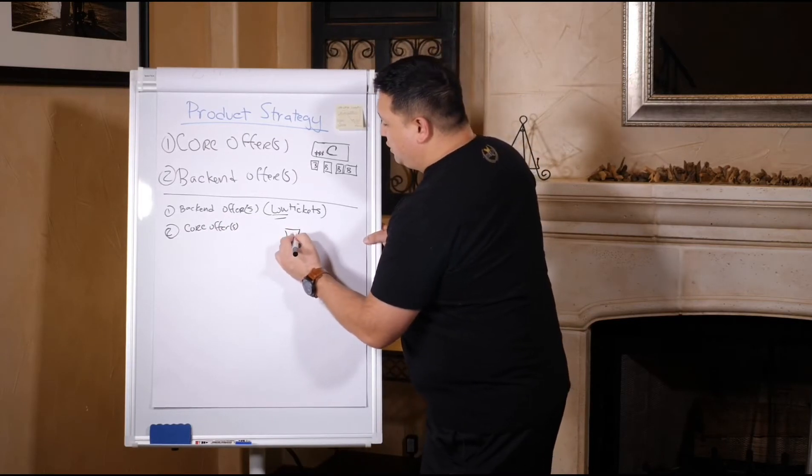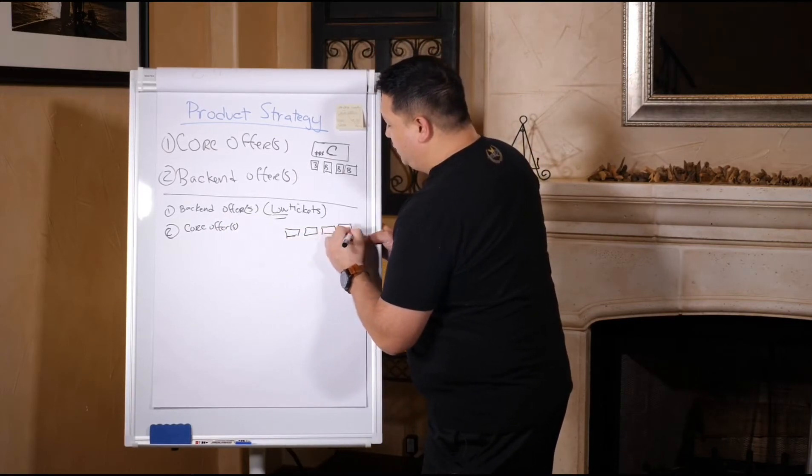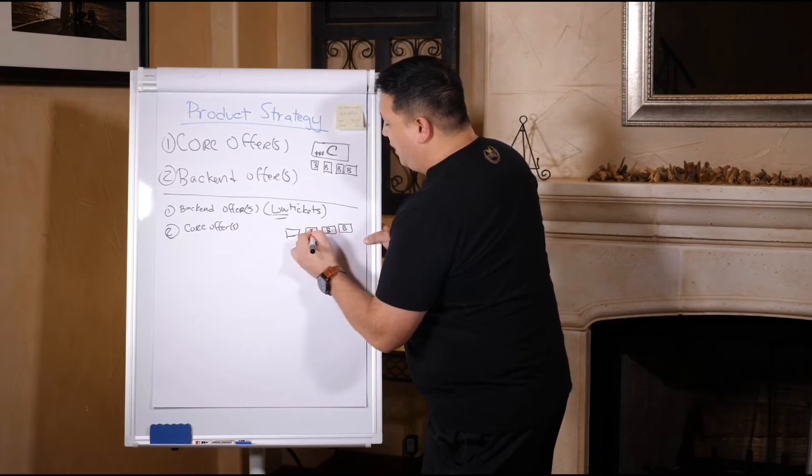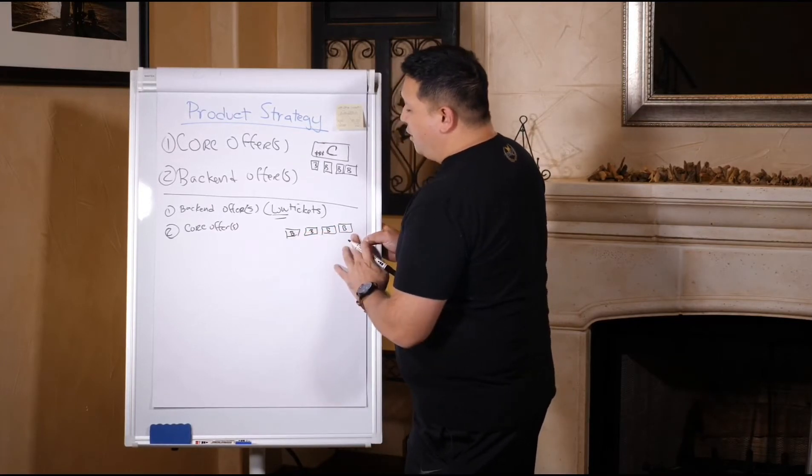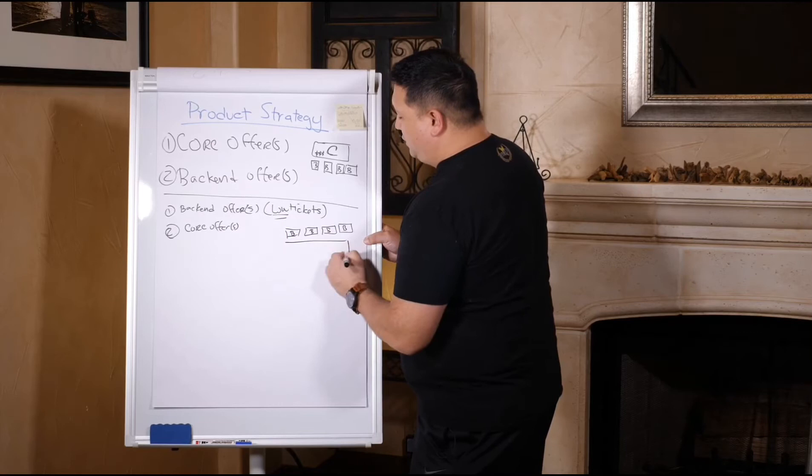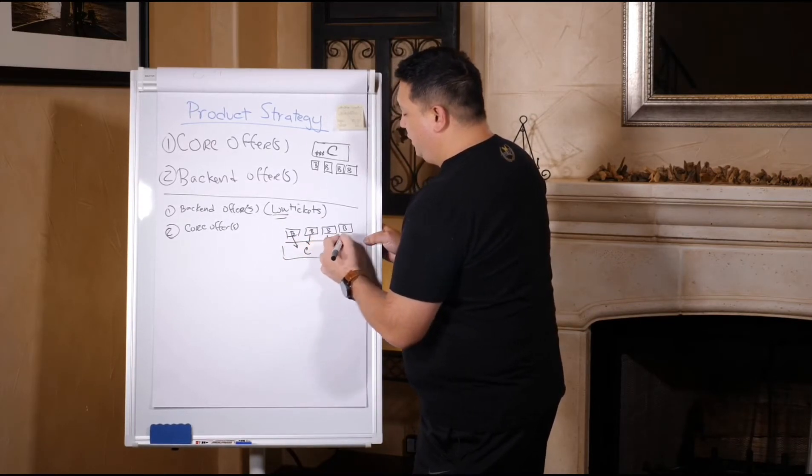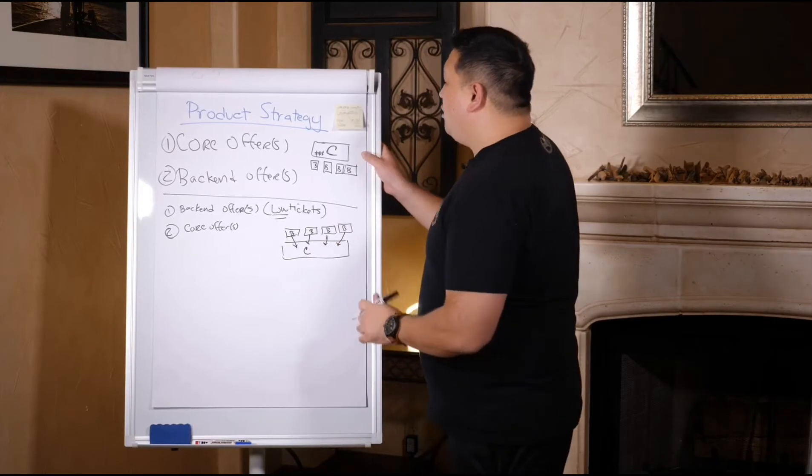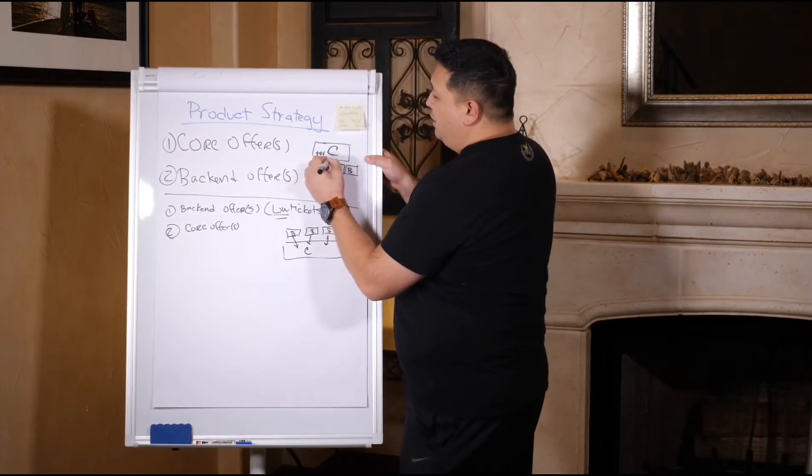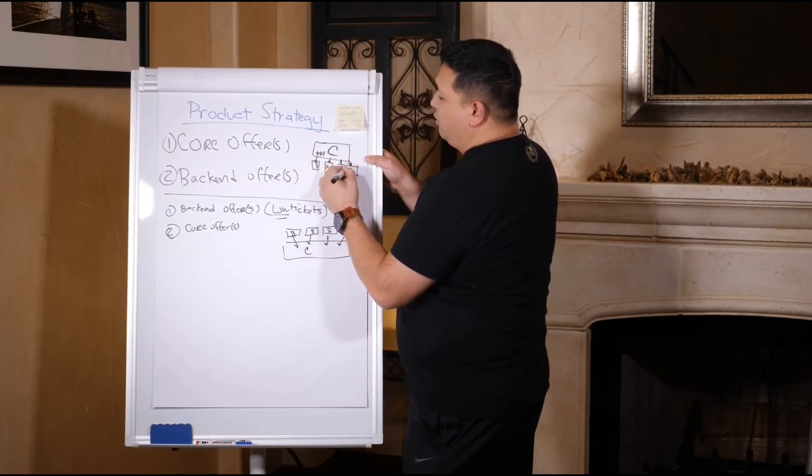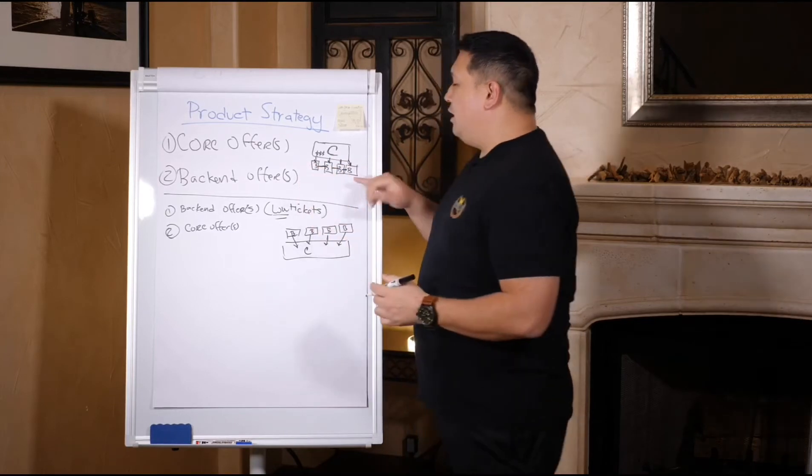What this would look like is just the reciprocal of the other one, where you have backend offers that the customer sees first which all leads the customer to your core offer. So this right here becomes a way that you can sell - you'll hear people say cross-sell, upsell, cross-sell.